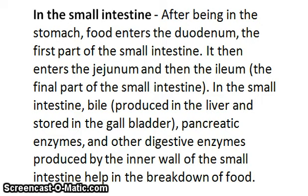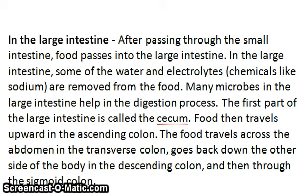In the large intestine. After passing through the small intestine, food passes into the large intestine. Some of the water and electrolytes are removed from the food. Many microbes in the large intestine help in the digestion process. The first part of the large intestine is called the cecum. The food then travels upward in the ascending colon, across the abdomen in the transverse colon, back down the other side of the body in the descending colon, and then through the sigmoid colon.